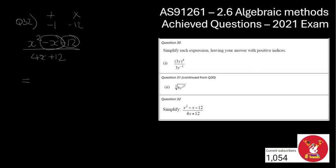So adds to that, multiplies to that. Hopefully you're thinking negative 4 and positive 3. So that means my brackets are going to be x minus 4, and then we've got x plus 3.